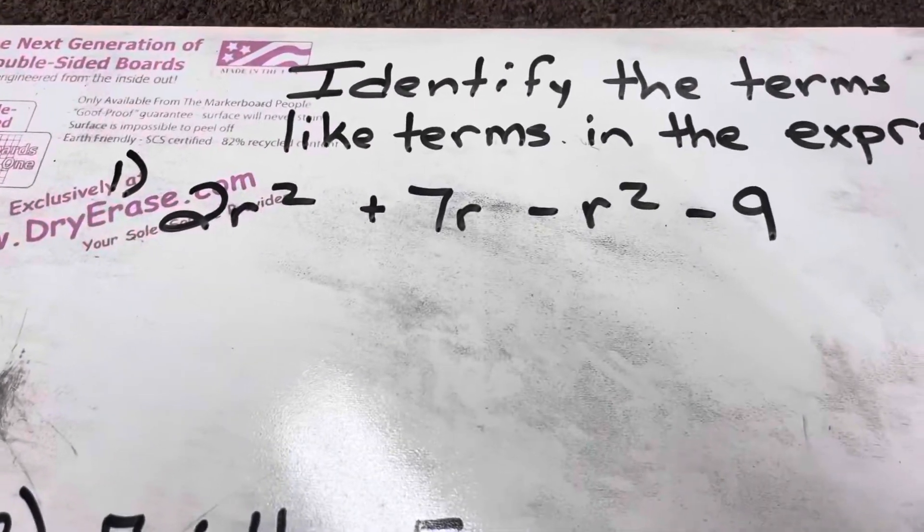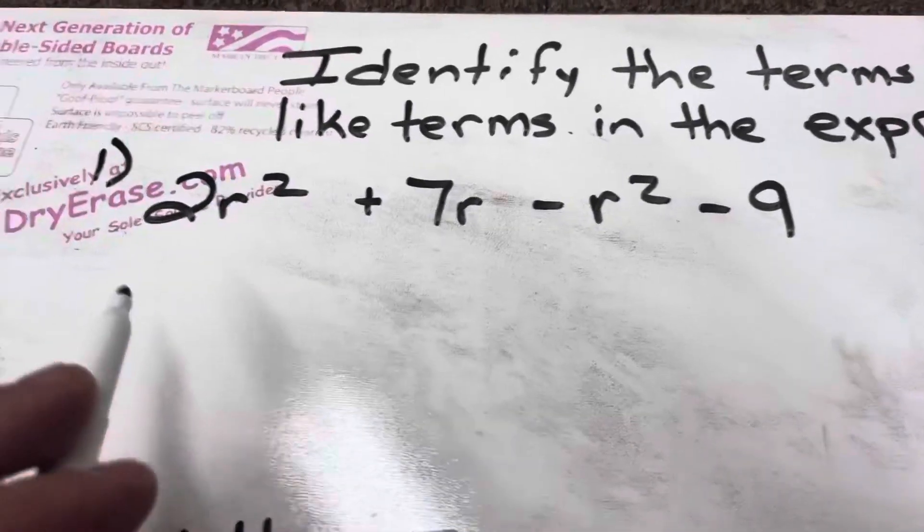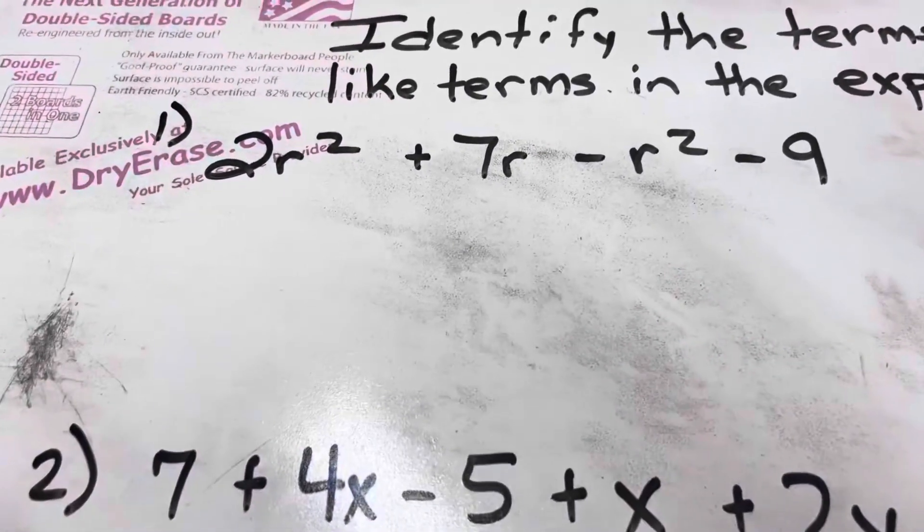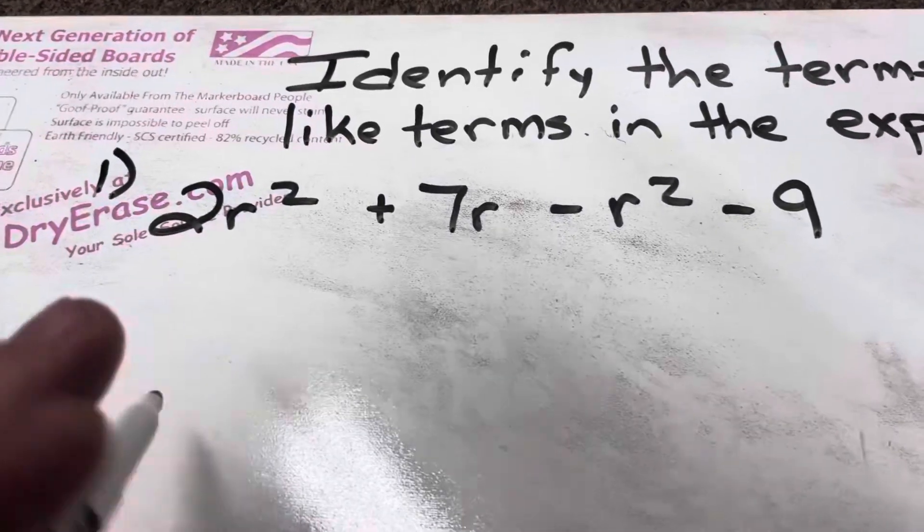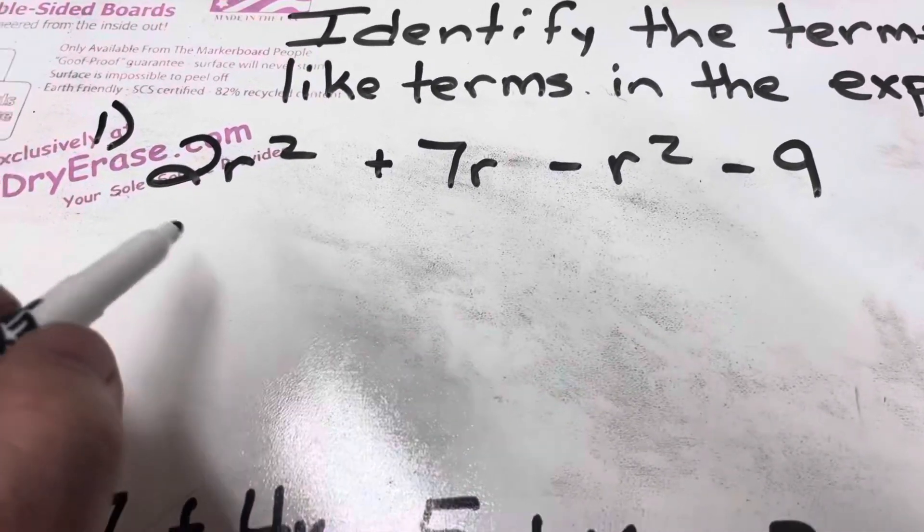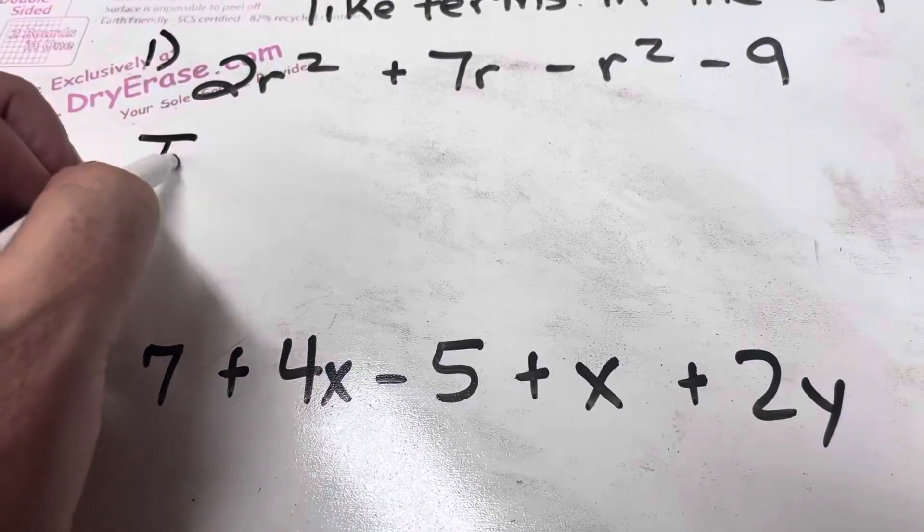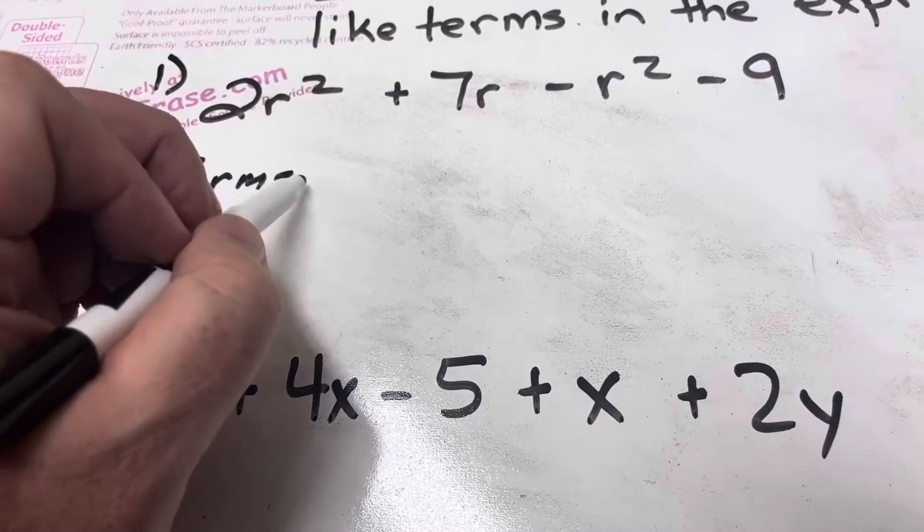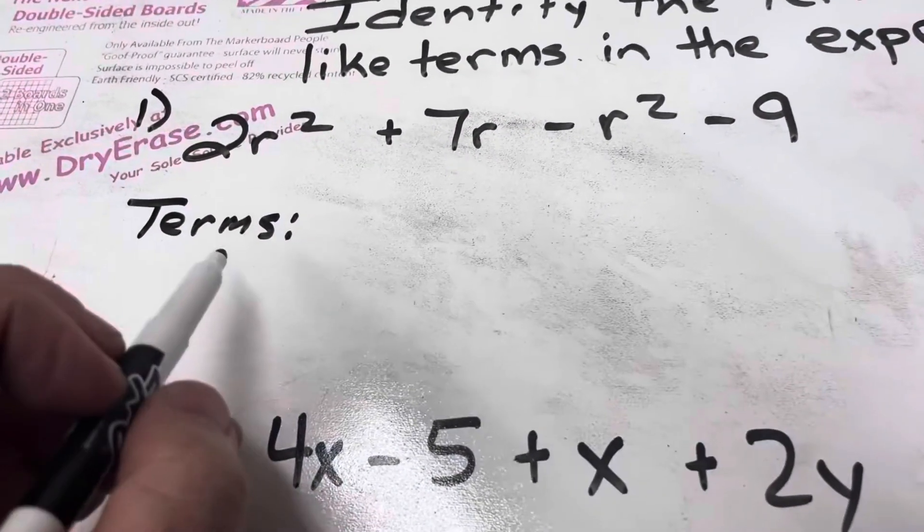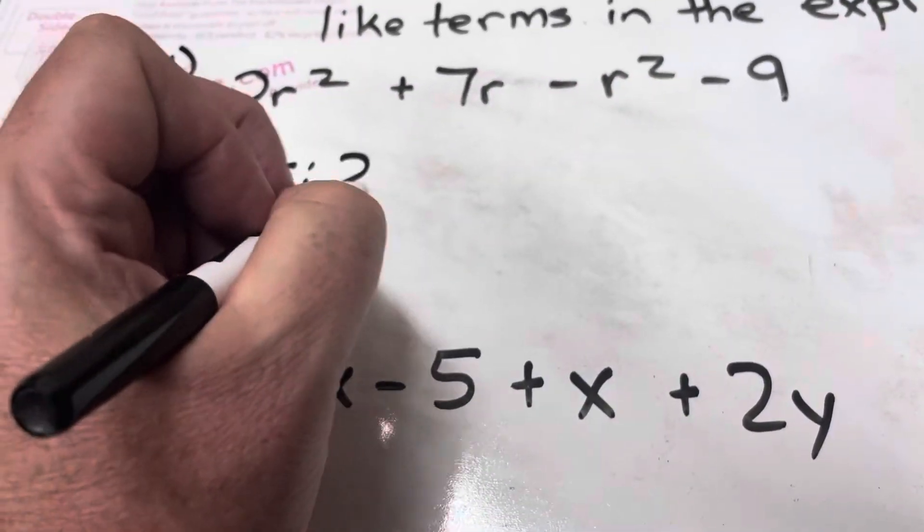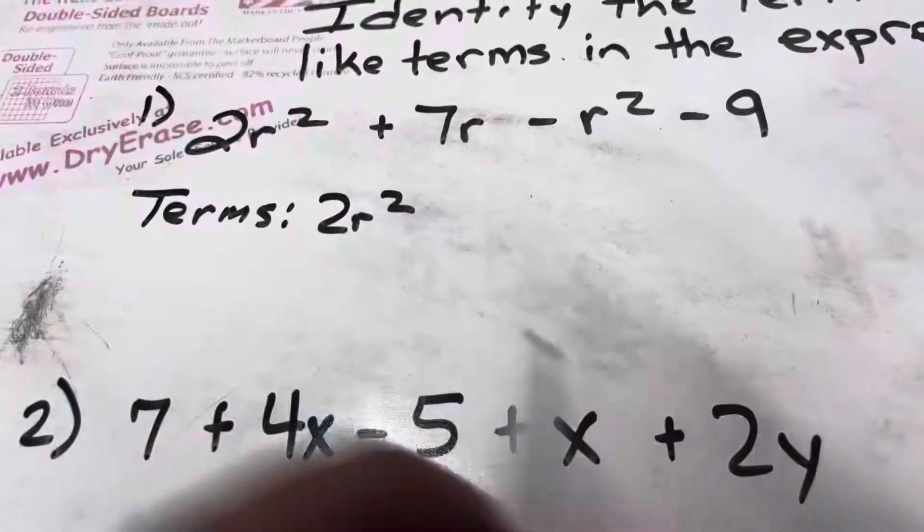This first section here, identify the terms and like terms in the expression. When we talk about terms, terms are any number that show up in the problem. So if I look at this first one, 2r squared plus 7r minus r squared minus 9, and I were to list the terms, my first term is 2r squared.